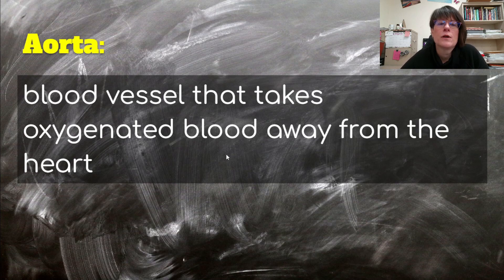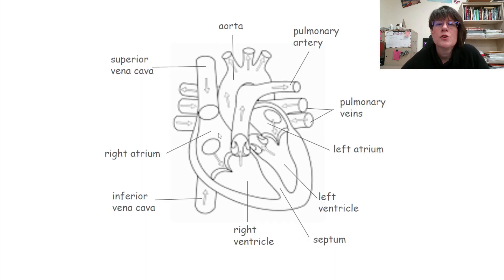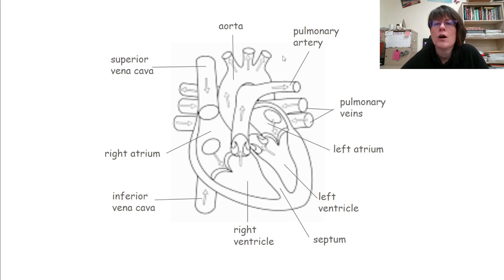Then there's the aorta. This is the blood vessel that takes oxygenated blood away from the heart. The aorta is an artery that takes blood to different parts of the body — to the head, to the heart itself, and down to all parts of the body. These three arteries branching off of it are going to take blood to different parts of the body.